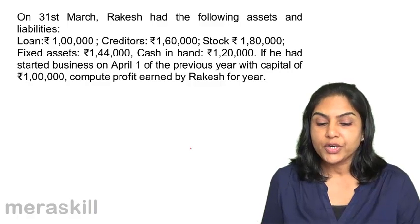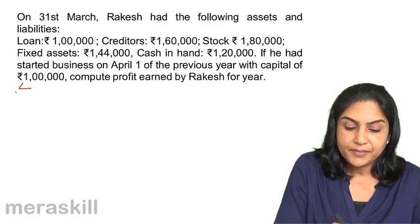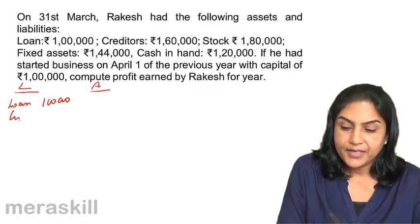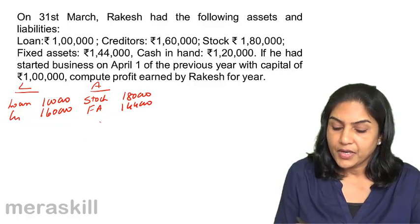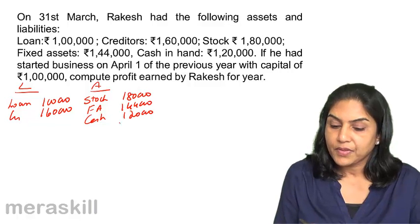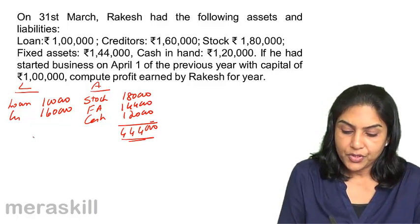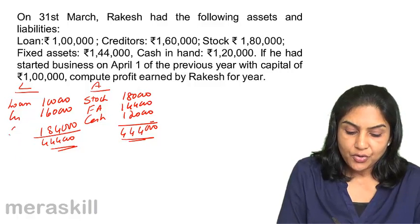His opening capital is 1 lakh. To find his closing capital, I put liabilities on one side and assets on the other. Liabilities: loan 1 lakh, creditors 1 lakh 60,000. Assets: stock 1 lakh 80,000, fixed assets 1 lakh 44,000, cash 1 lakh 20,000. Total assets come to 4 lakh 44,000. Balancing, the closing capital would be 1 lakh 84,000.